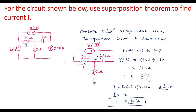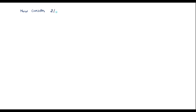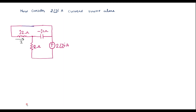Now in the second case, I will consider the 2∠90° current source alone. So in that case, the voltage source is short circuited and the other current source is open circuited. I will draw the equivalent circuit. Consider the 2∠90° amp current source alone. Here I have opened the other current source and shorted the voltage source.